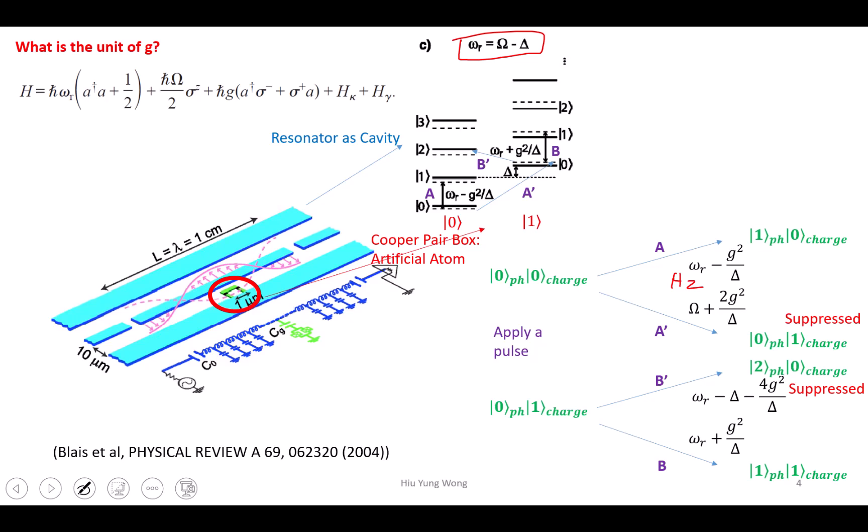So delta must also be hertz, or angular frequency. Then what should g be? Something divided by hertz is still hertz. Then g must be—g squared must be hertz squared. That means g has a unit of hertz.